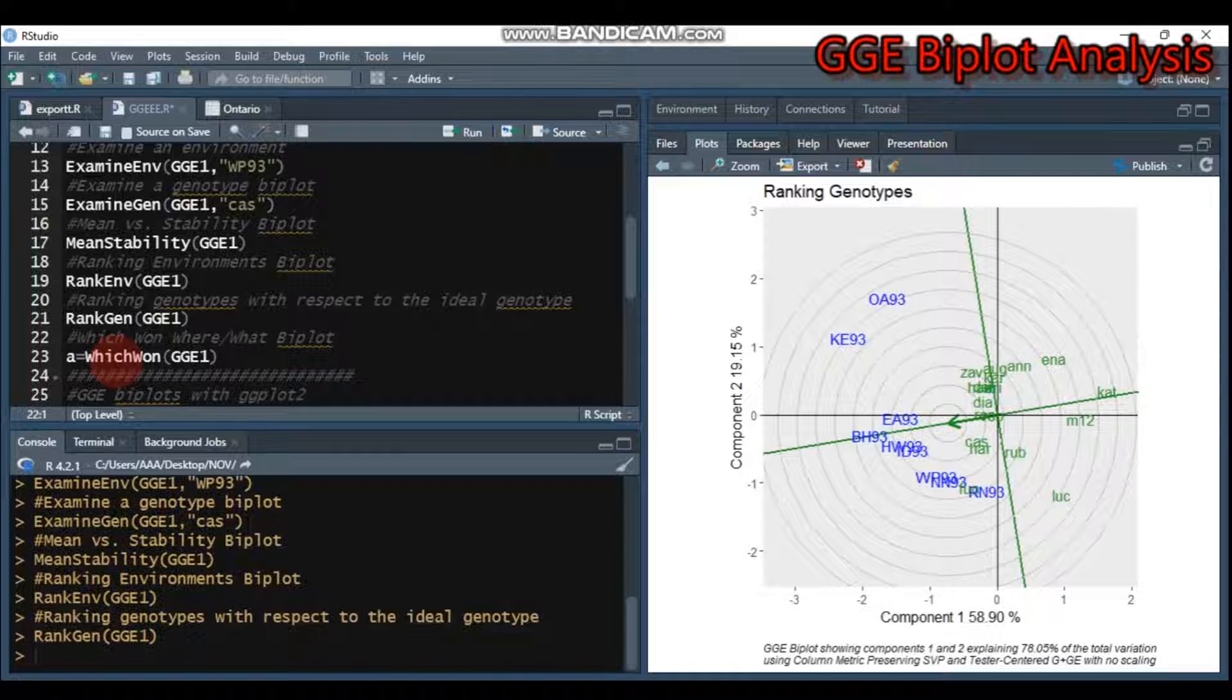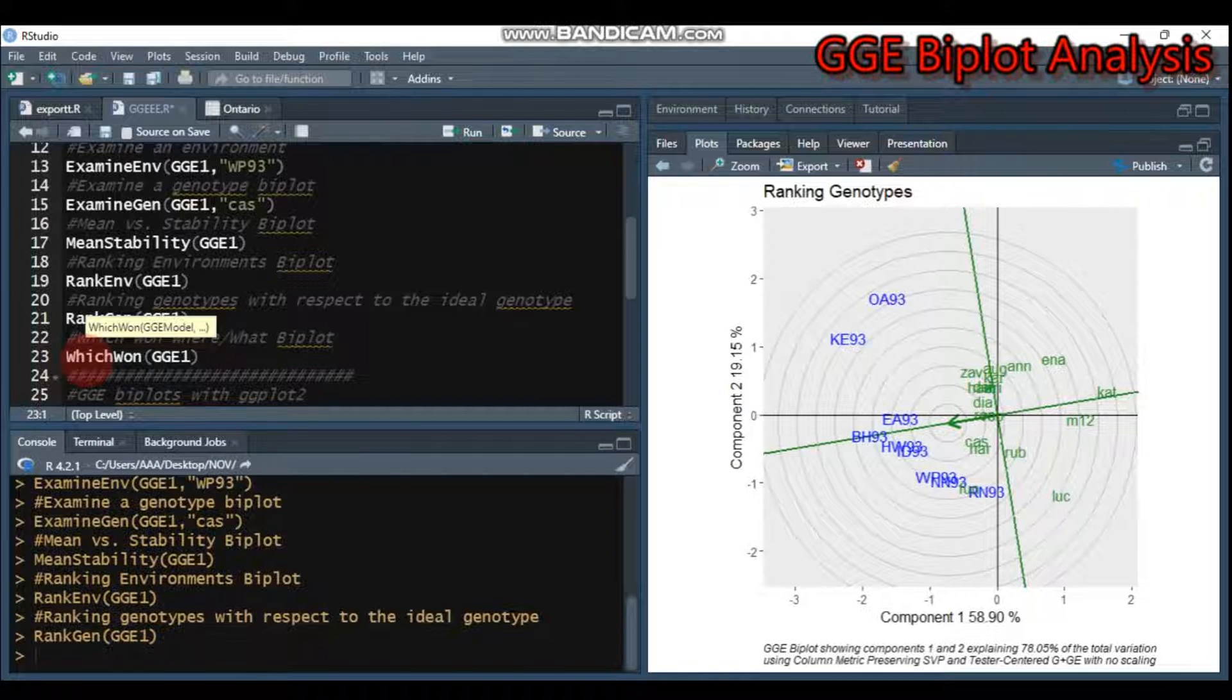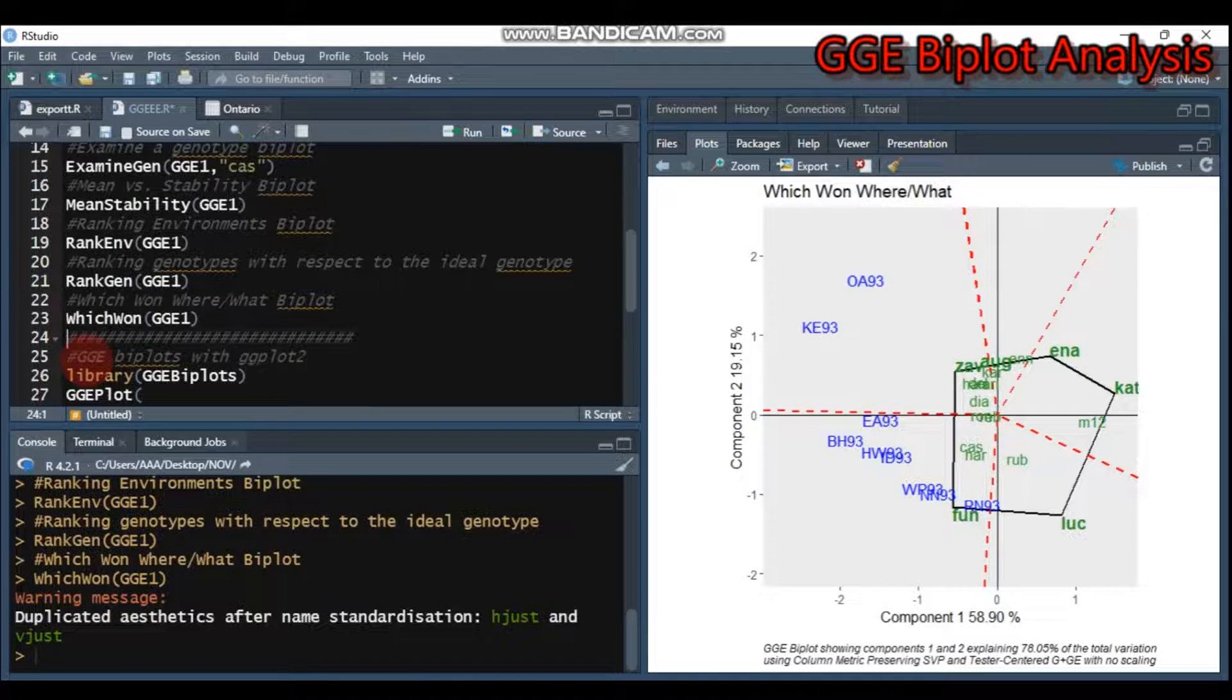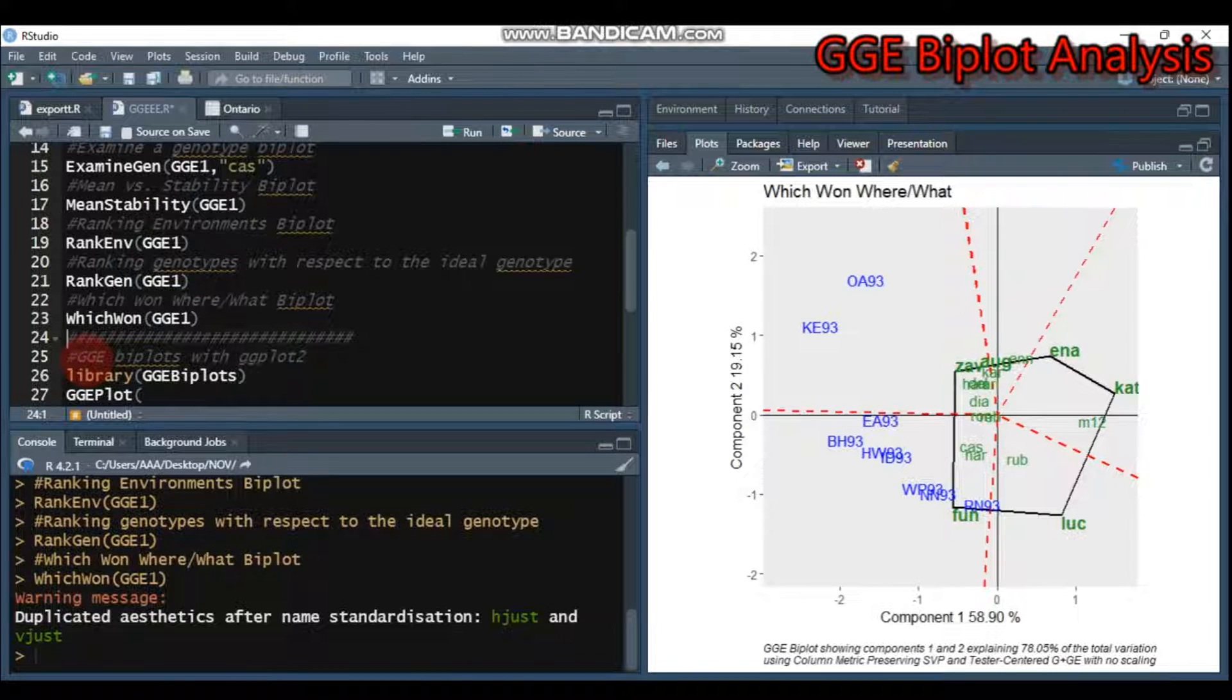Lastly, if you want to display which-won-where, you have to use the function which.won.where, then submit to R Studio. By this way, you can get the which-won-where biplot.